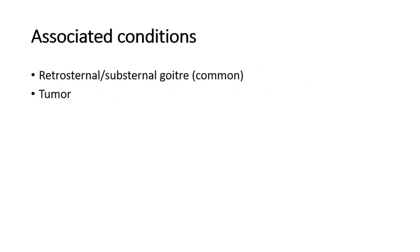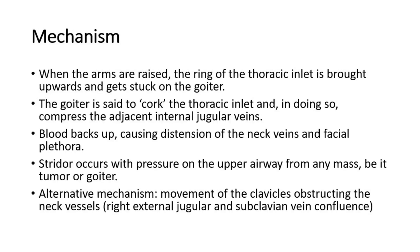The associated conditions of Pemberton's sign are retrosternal or substernal goiter, or tumor in the neck. When looking at the mechanism: when the arms are raised, the ring of the thoracic inlet is brought upwards and gets stuck on the goiter.